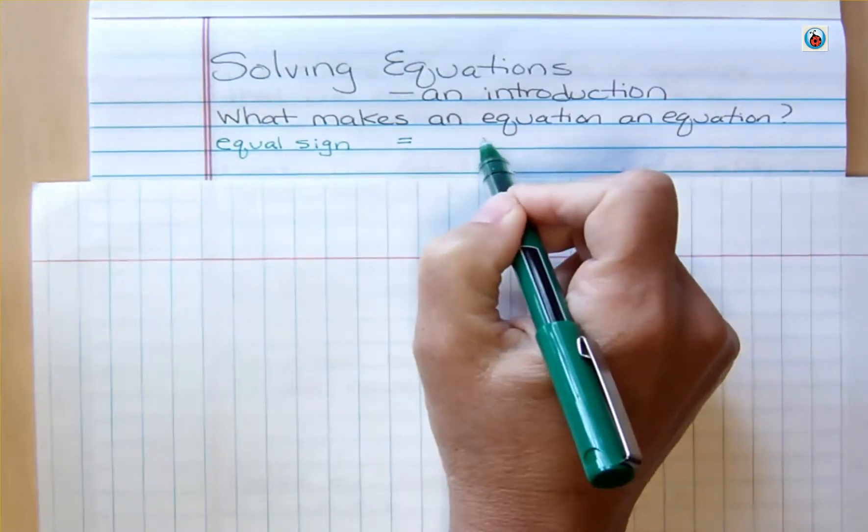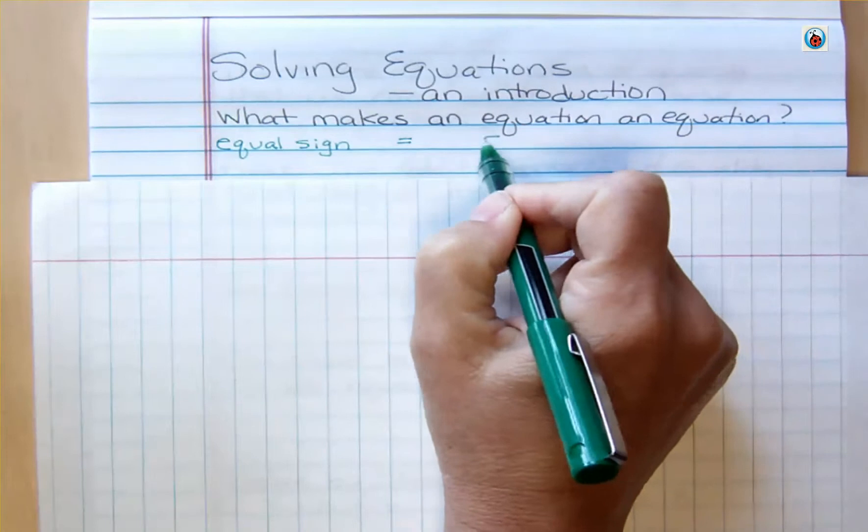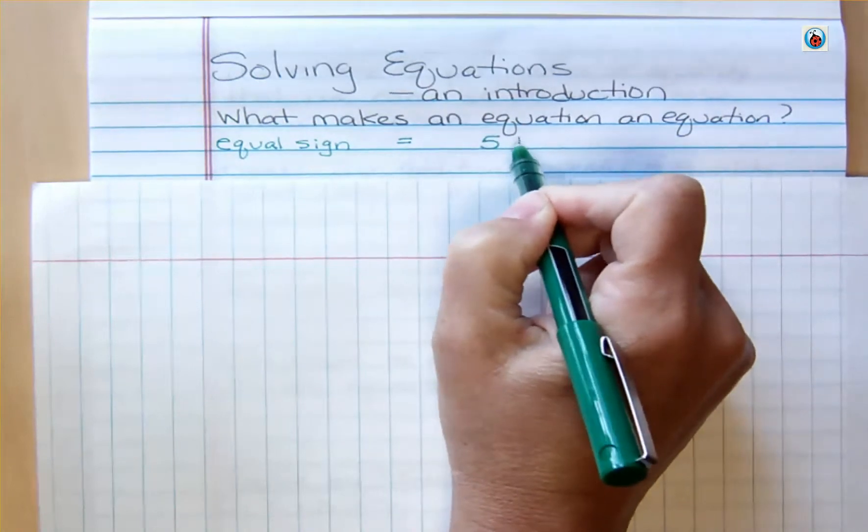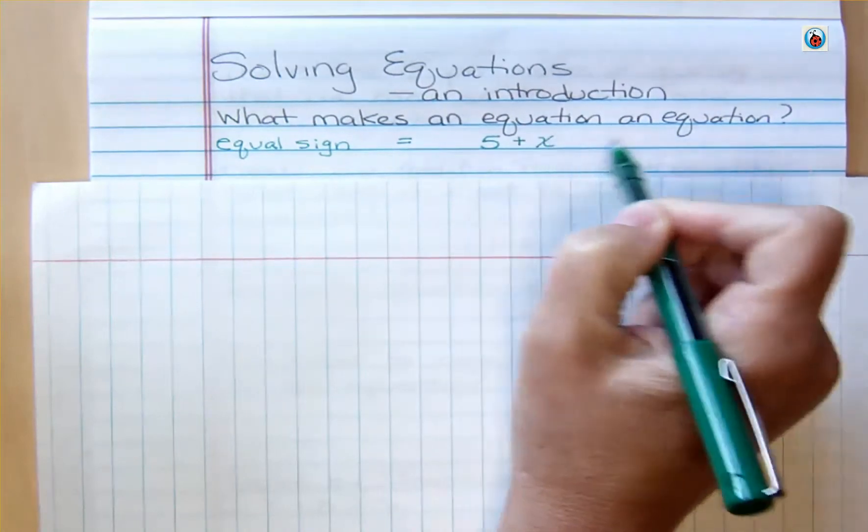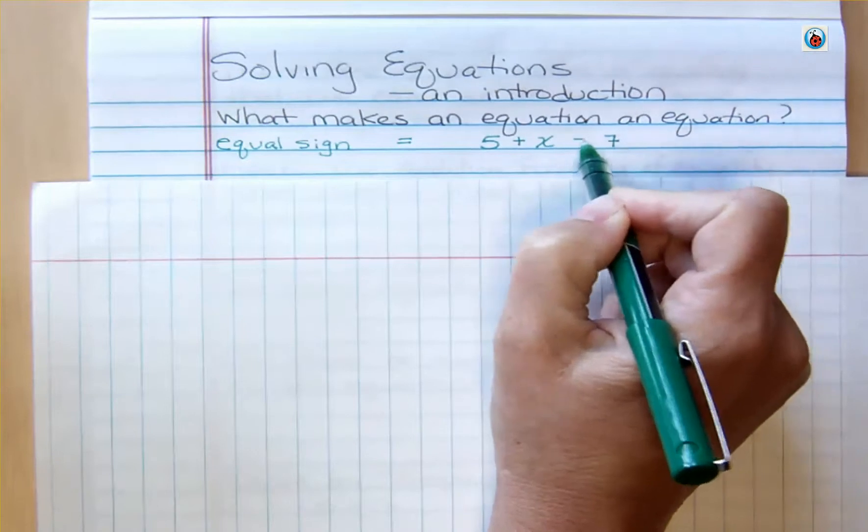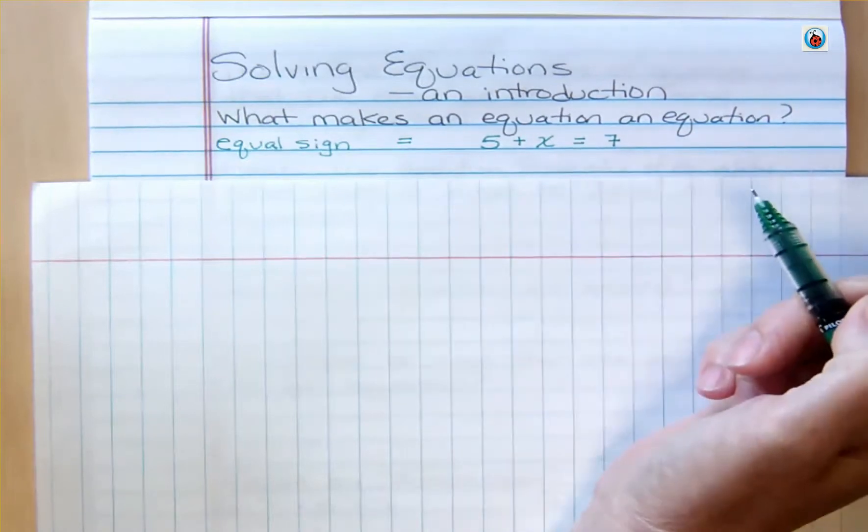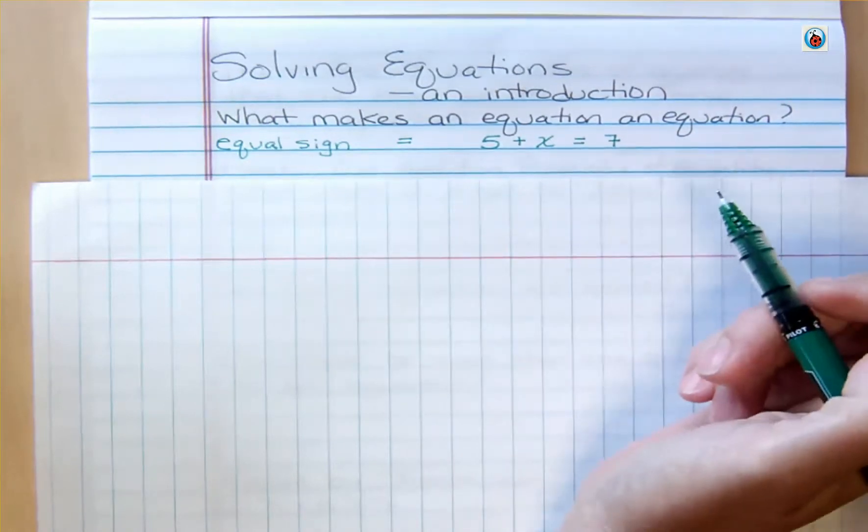It could be that it's got a constant term, it could have an operation, it can have a variable, it can have another constant over here, but there has to be an equal sign for it to be an equation. So it's the equal sign that makes it an equation.